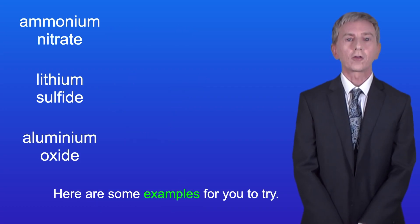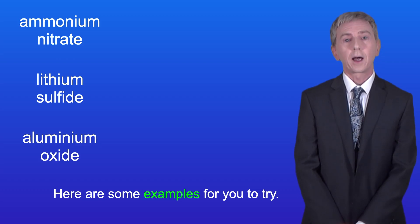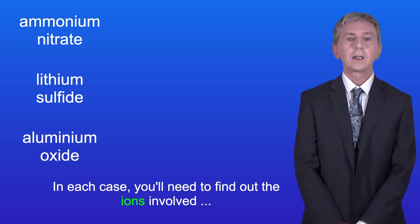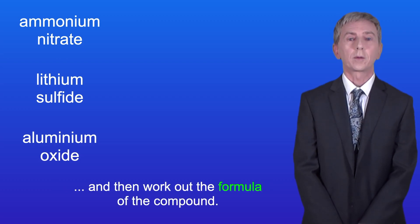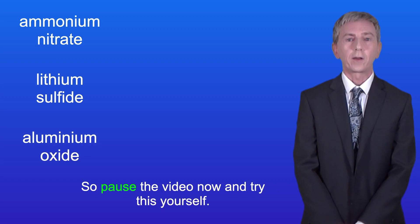Here are some examples for you to try. We've got ammonium nitrate, lithium sulfide and aluminium oxide. In each case you'll need to find out the ions involved and then work out the formula of the compound. So pause the video now and try this yourself.